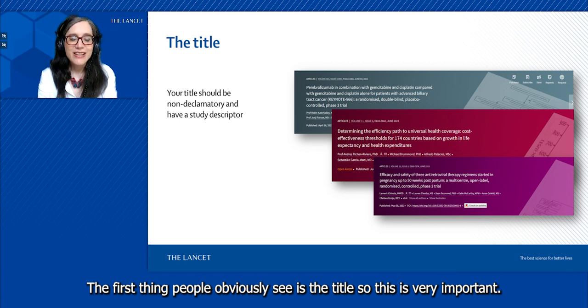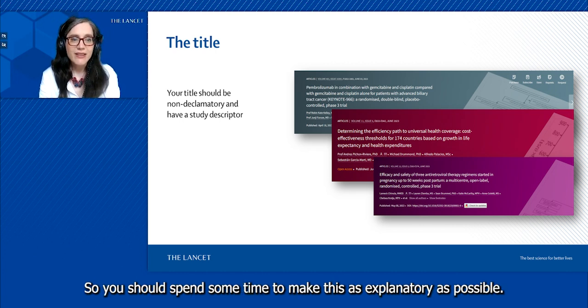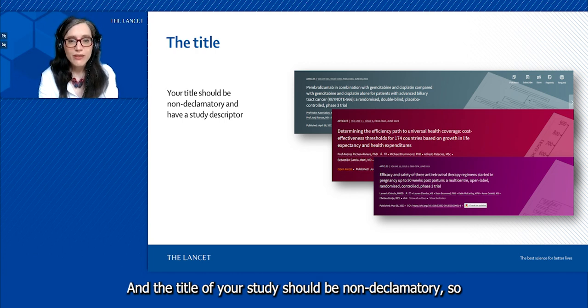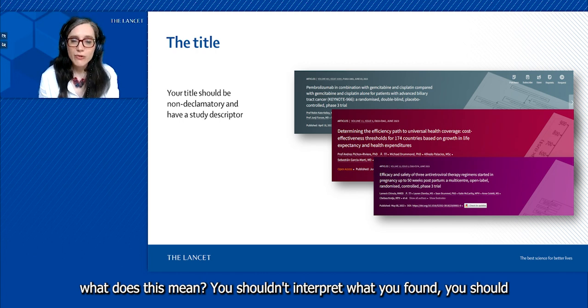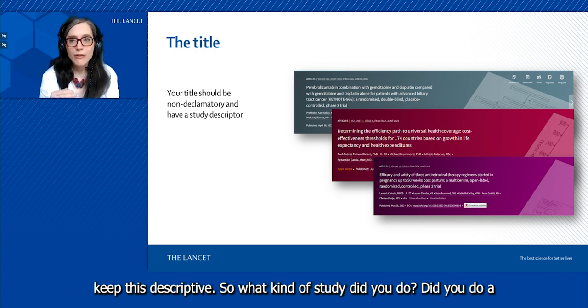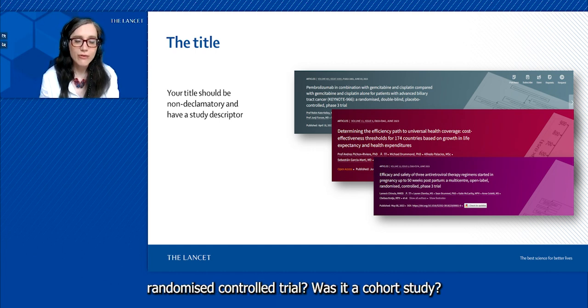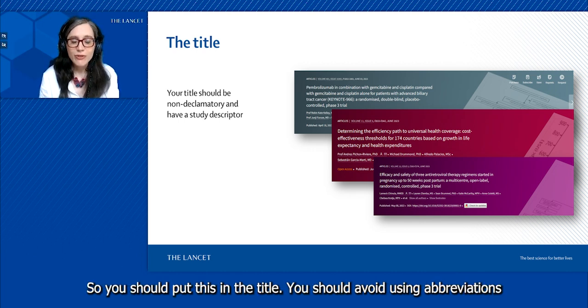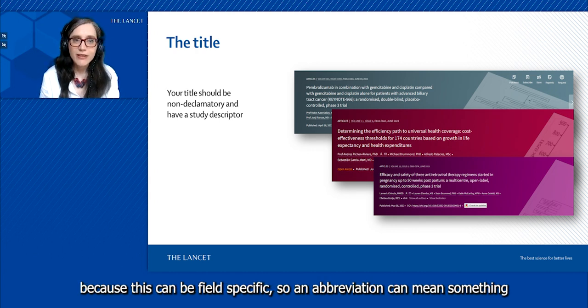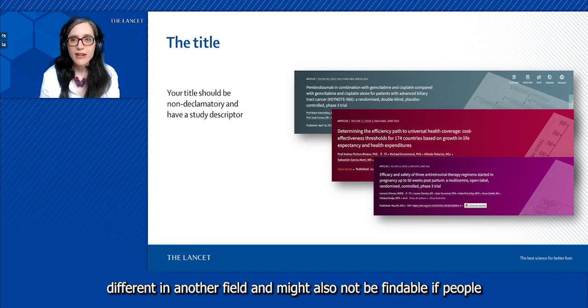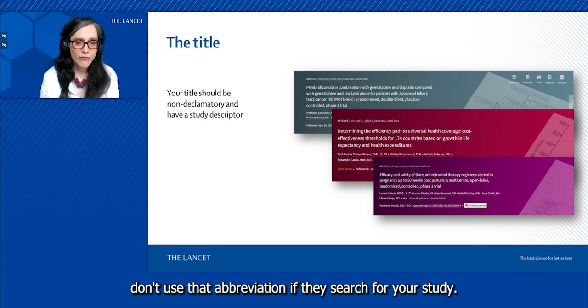The first thing people obviously see is the title, so this is very important. You should spend some time to make this as explanatory as possible. The title should be non-declaratory, so what does this mean? You shouldn't interpret what you found, you should keep this descriptive. What kind of study did you do? Did you do a randomized controlled trial, was it a cohort study? You should put this in the title.